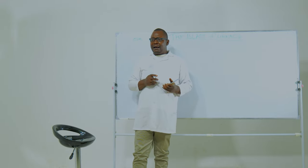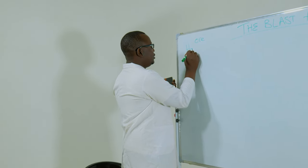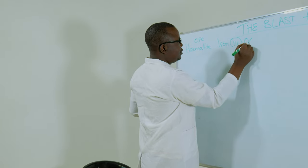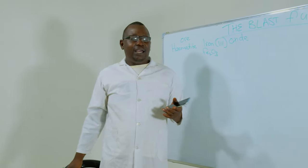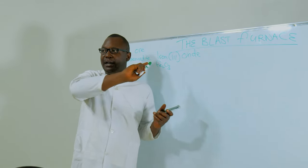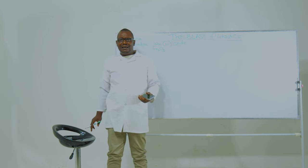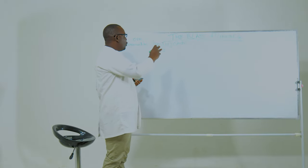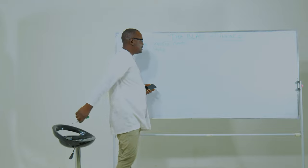The main iron deposits around the world are found as hematite. Hematite is known as iron(III) oxide, which is Fe2O3 in chemistry. So if you check this formula, iron(III) oxide — we require iron only; we don't require the oxide component. So we have to remove this oxide component using what are known as reducing agents, because reduction is the removal of oxygen. So we are supposed to undergo a series of chemical reactions known as redox reactions, which involve the removal of oxygen from iron(III) oxide.